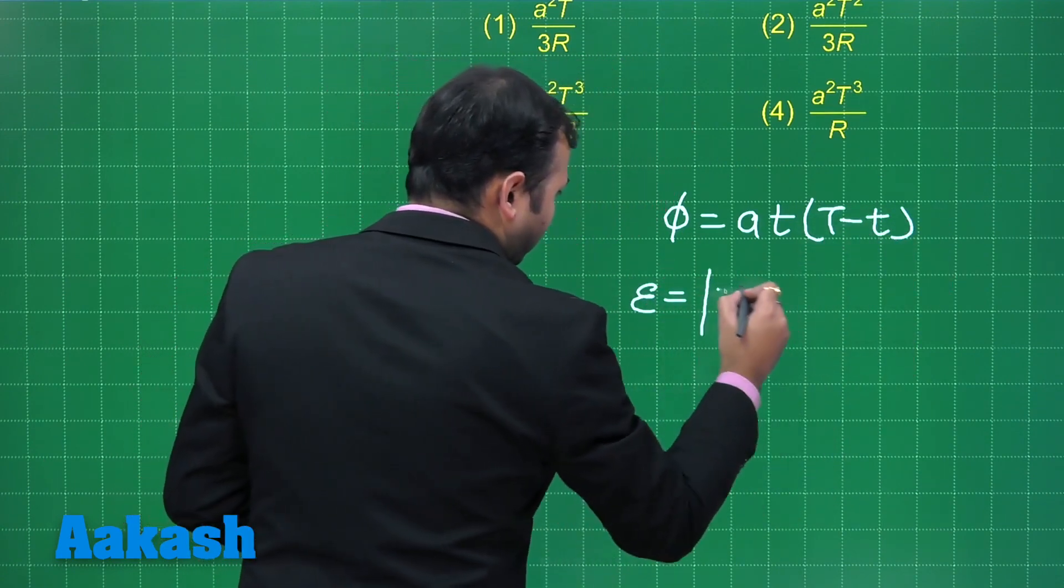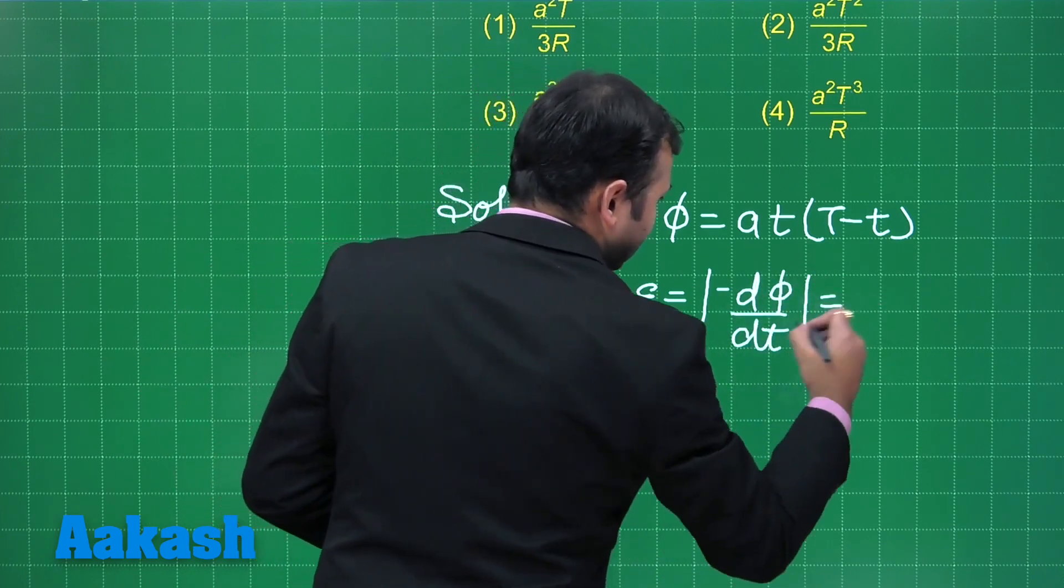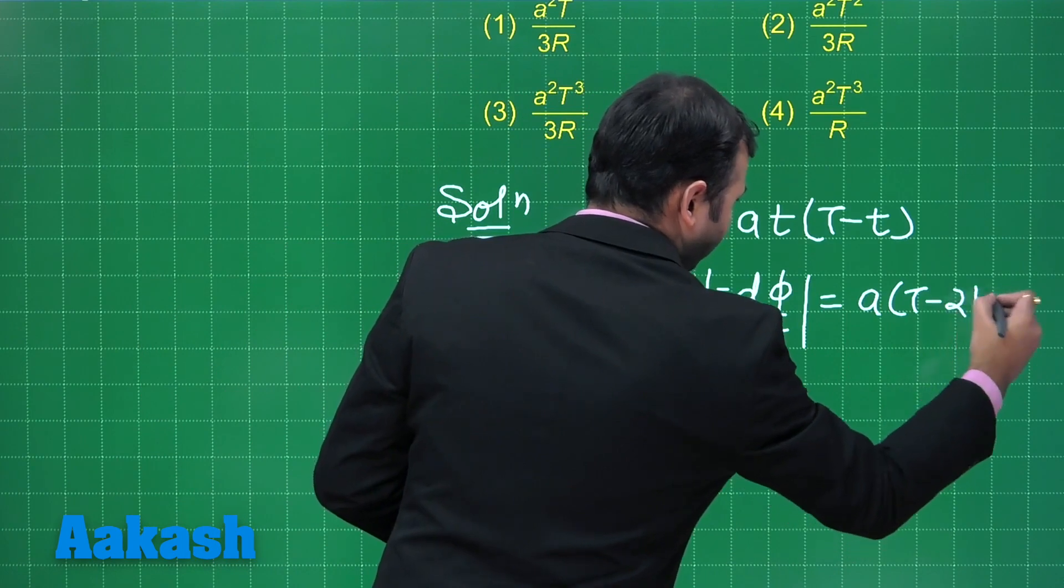Now, what about EMF? So, we can take the magnitude of d phi by dt. What we will get is A capital T minus 2t, right?